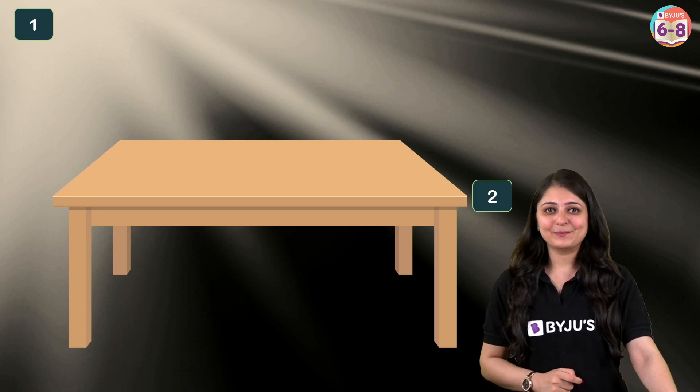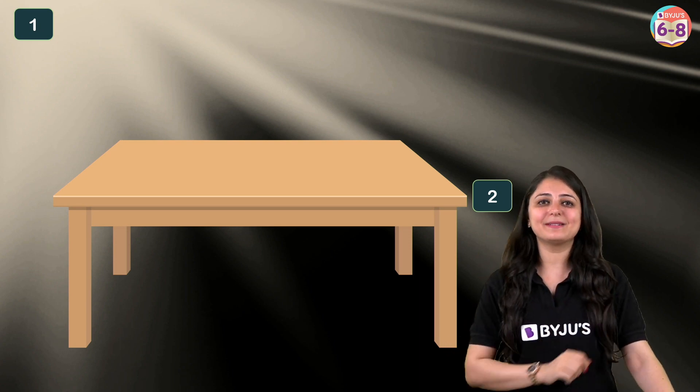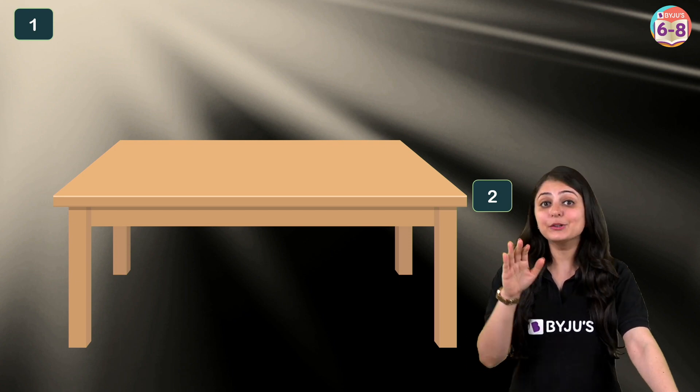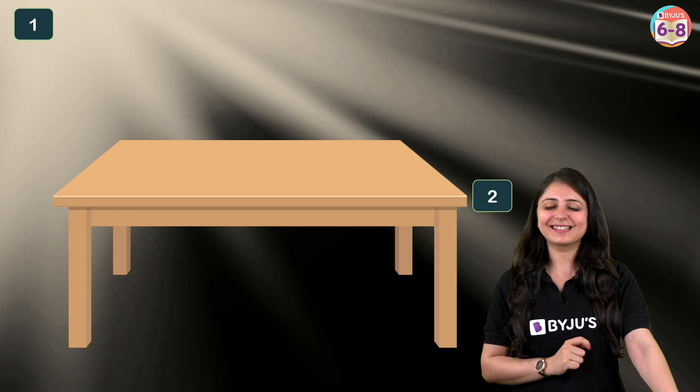Number two, study table. Avoid studying on a bed. You need to have a simple table and chair in your room. When you sit and study on a table and a chair, laziness actually decreases.